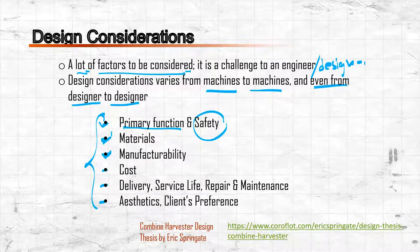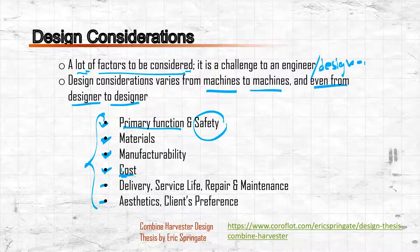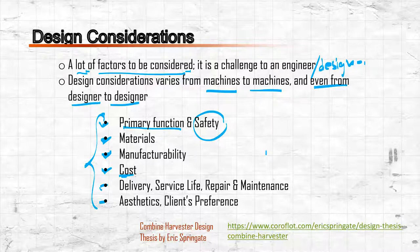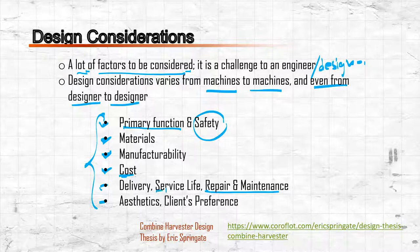Choice of materials is also a factor: sometimes you want a material with the best properties, but cost also comes into play, so it is a compromise between all these considerations. Another consideration is delivery, service life, and repair and maintenance. For example, comparing bolted connections and welded connections — welding may cost less, but repair and maintenance of a welded joint would be more difficult.